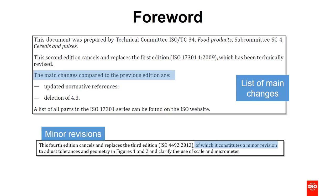The specific information in the foreword states which technical committee prepared the document — for example, TC 34, SC 4 — and notes that it cancels and replaces a previous edition, followed by a list of the main changes. For a minor revision, the text reads: 'This fourth edition cancels and replaces the third edition, of which it constitutes a minor revision', followed by a description of changes — for example, adjusting tolerances and geometry in figures and clarifying the use of scale and micrometer.